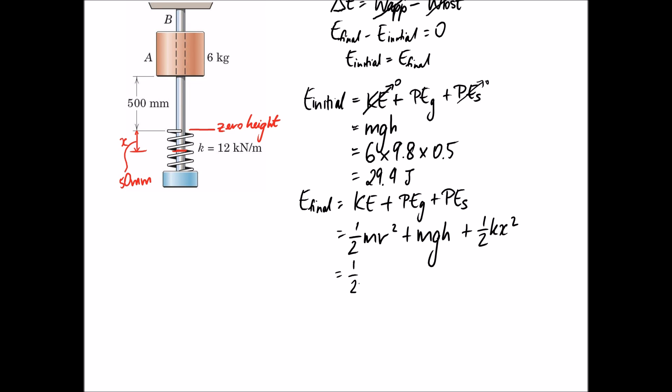Starting off with the kinetic energy, it's going to be a half times the mass of the block, which is 6 kilograms, multiplied by its velocity, which is v squared. For potential energy due to gravity, it's the mass of 6 times gravity, which is 9.8.